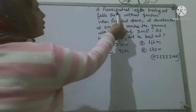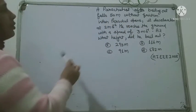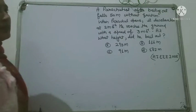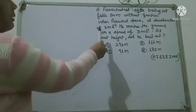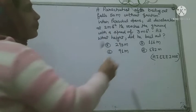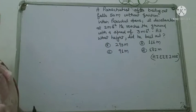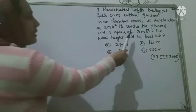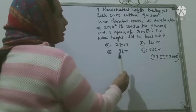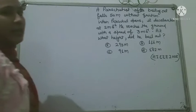A parachutist test: after bailing out, he falls 50 meters without friction. When the parachute opens, it decelerates at 2 meters per second squared. He reaches the ground with a speed of 3 meters per second. At what height did he bail out?